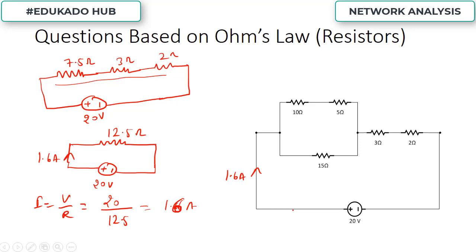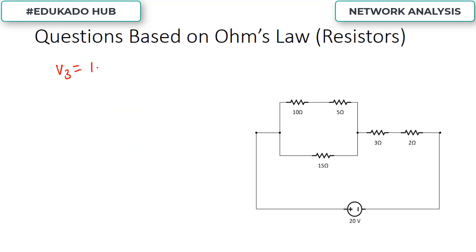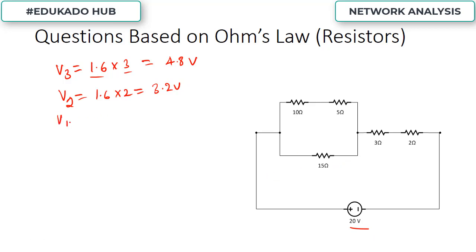As the current in a series circuit remains the same, 1.6 amperes will flow through both the 3 ohm and 2 ohm resistors. Voltage across 3 ohms equals I times R, which is 1.6 times 3 equals 4.8 volts. Voltage across 2 ohms equals 1.6 times 2 equals 3.2 volts. Since 20 volts is divided between these three parts, voltage across the 15 ohm section equals 20 minus 4.8 minus 3.2, which gives 12 volts.